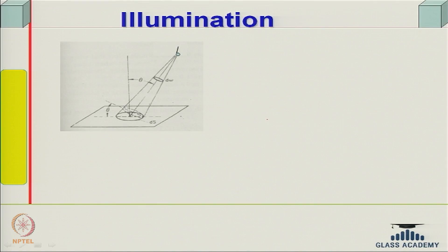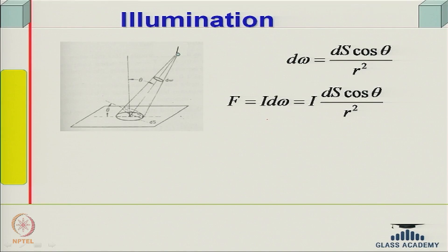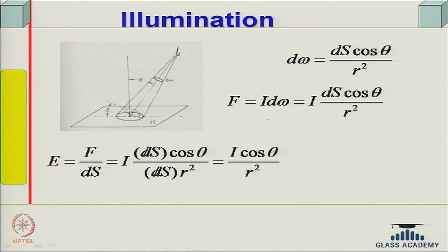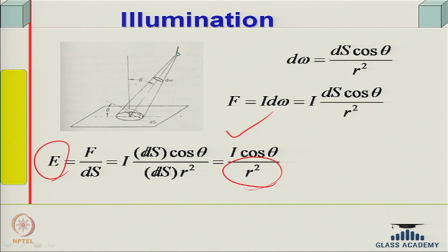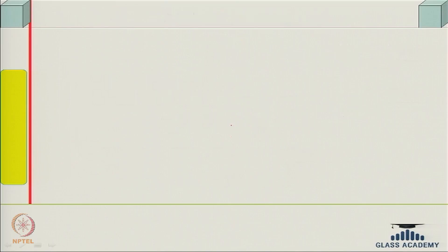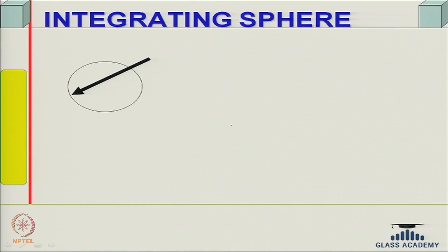One important law is the inverse square law. The illumination from a source of intensity i at distance r and incident angle theta is given by i·cos(theta) / r². So from a point source the illumination at distance r is i·cos(theta) / r². There is also the principle of the integrating sphere: when light enters a sphere it is internally reflected multiple times.